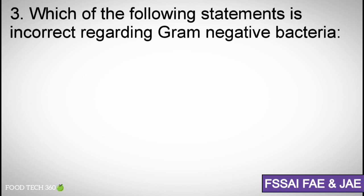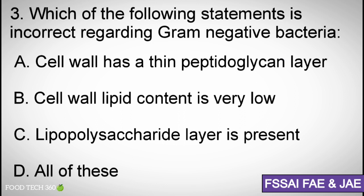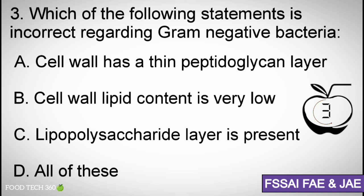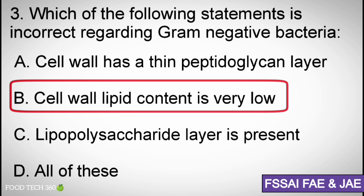Question number 3. Which of the following statements is incorrect regarding gram-negative bacteria? A. Cell wall has a thin peptidoglycan layer, B. Cell wall lipid content is very low, C. Lipopolysaccharide layer is present, D. All of these. Correct answer: B. Cell wall lipid content is very low.